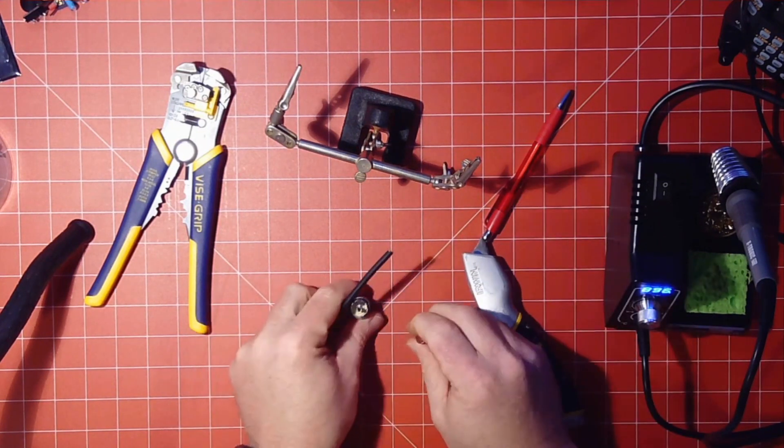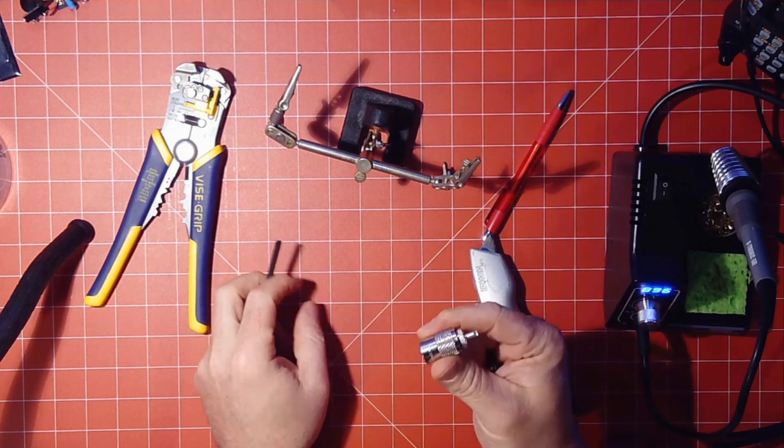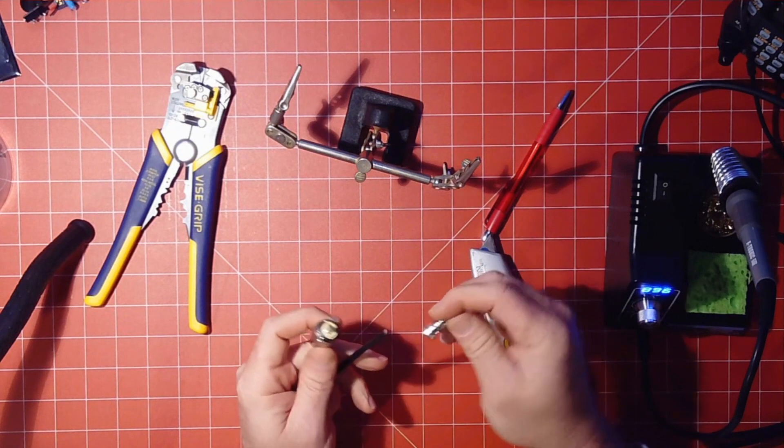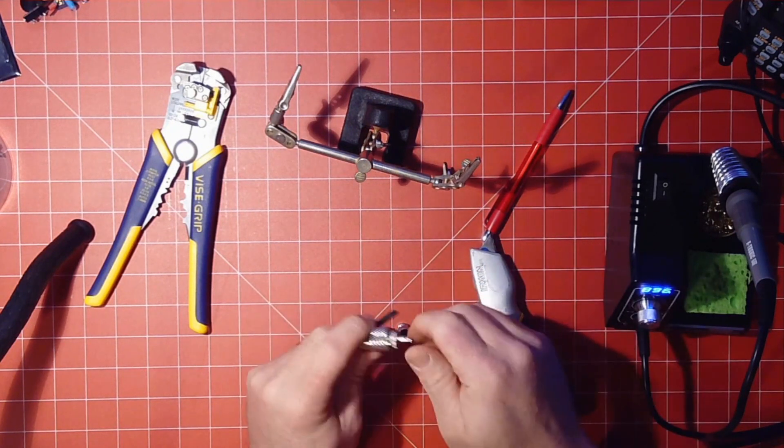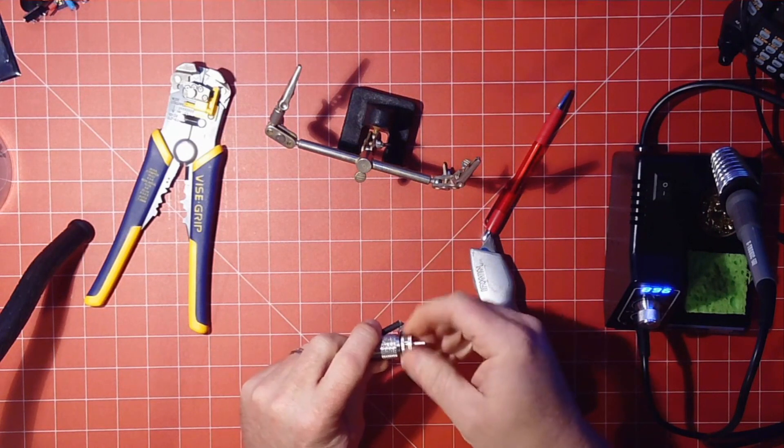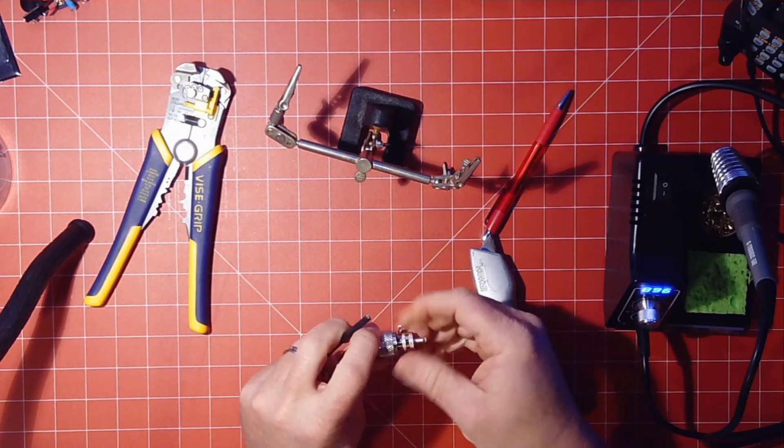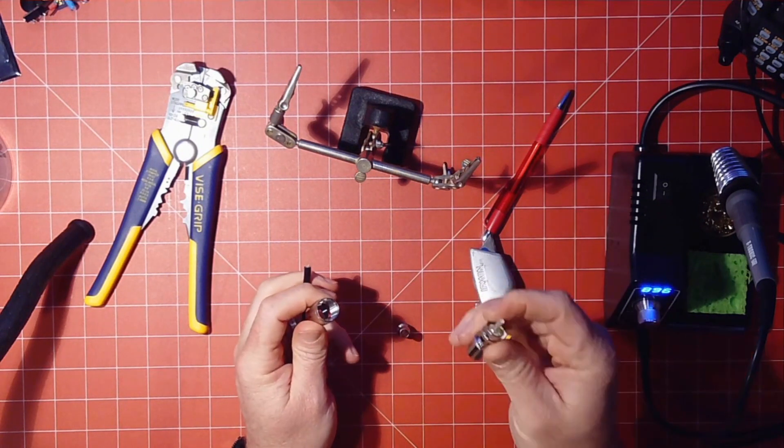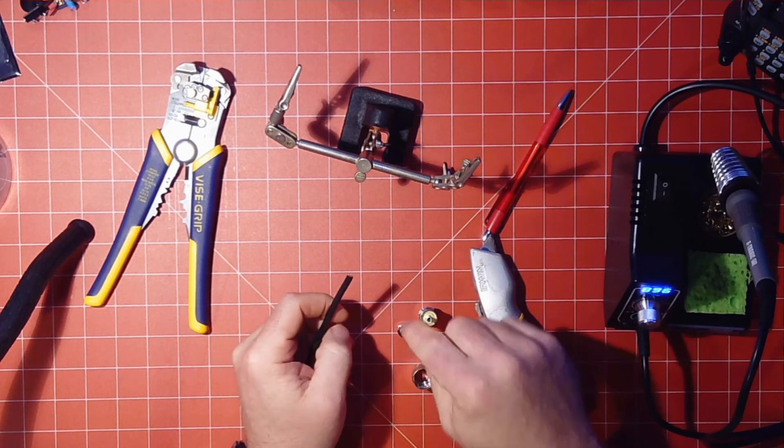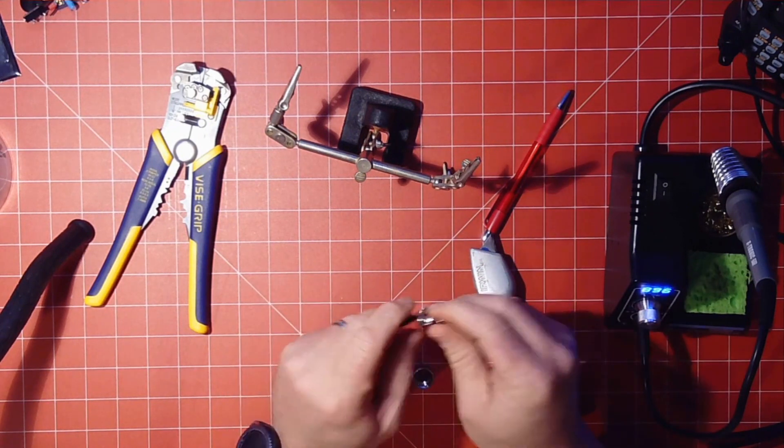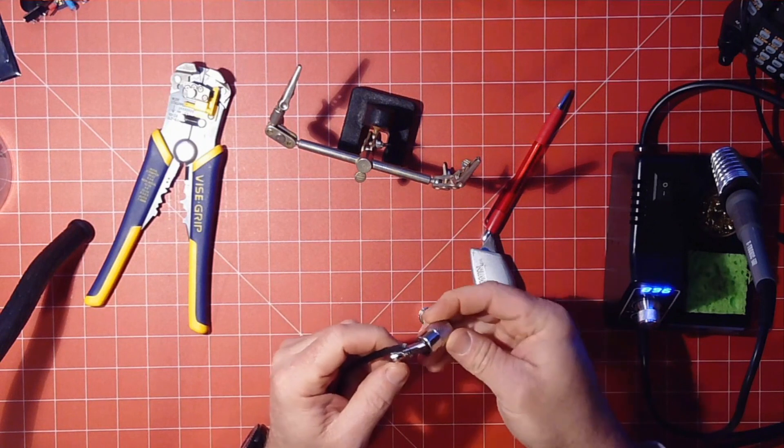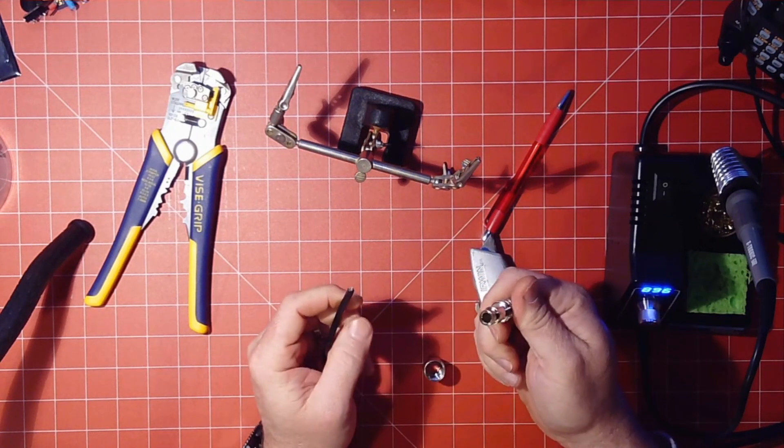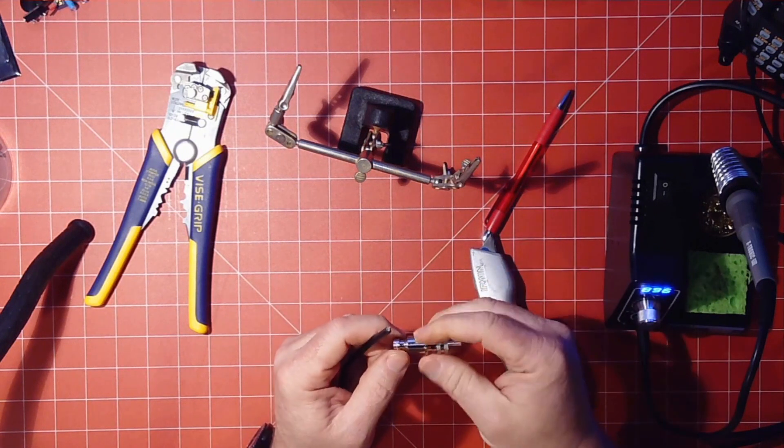So basically the coax consists of the connector, and in this case it's an adapter. And this is actually slightly too big for this. This is an RG8X adapter, and it's going on RG59 or RG58. So what you do is you unscrew these, and you get the inner piece, the collar, and then you have the adapter. Now, what I go ahead and do is, if you go ahead and look, this is going to install into this when it's on the cable.